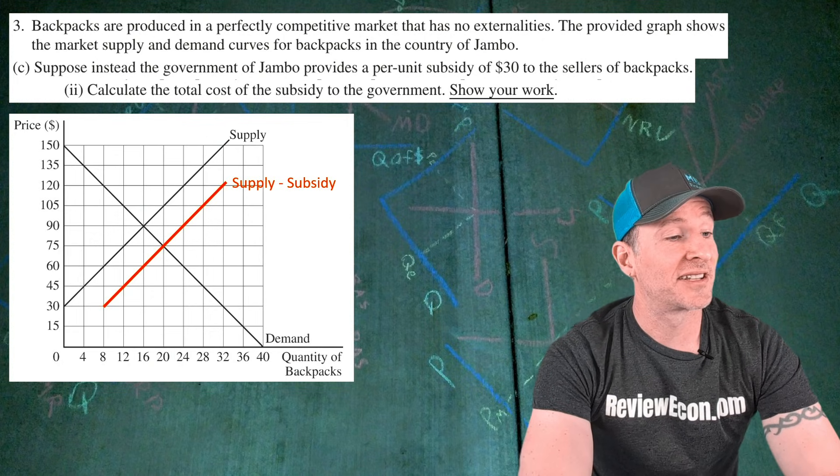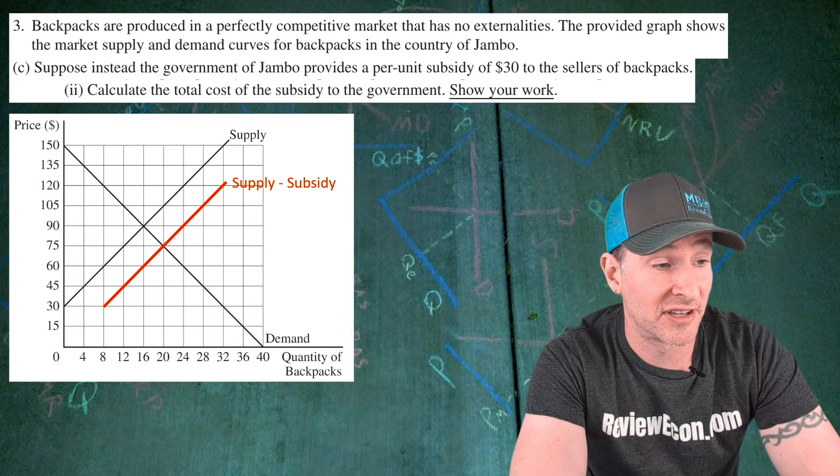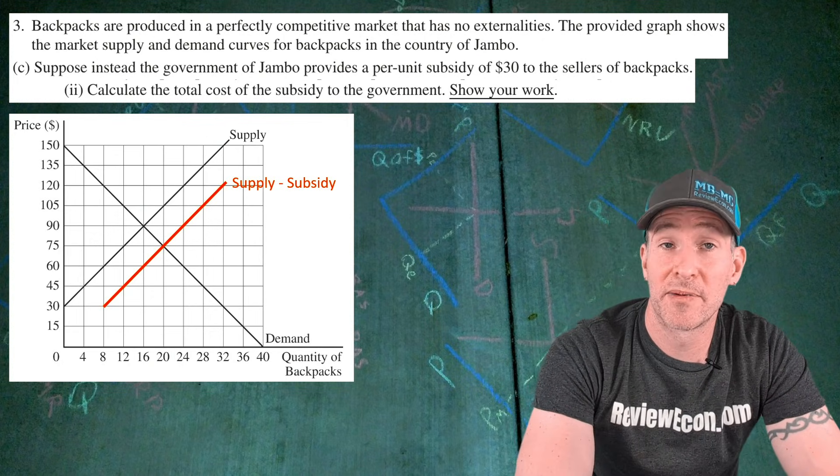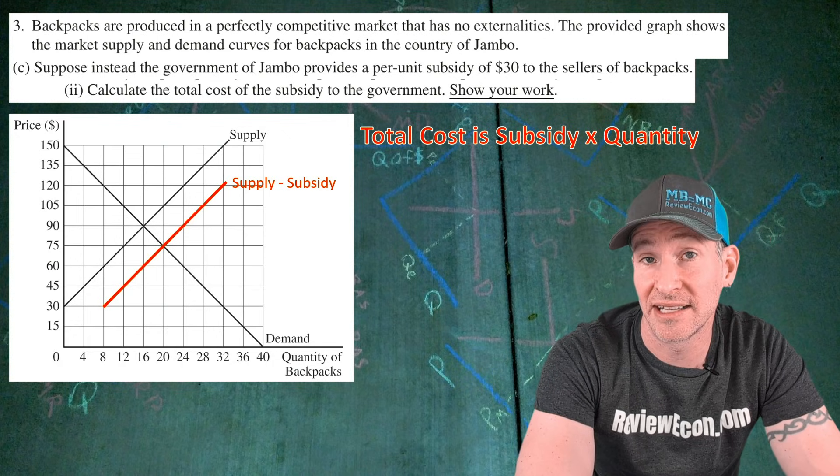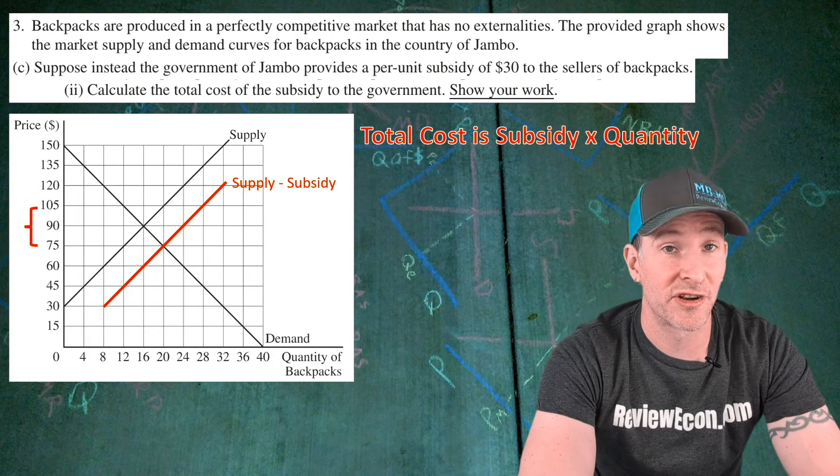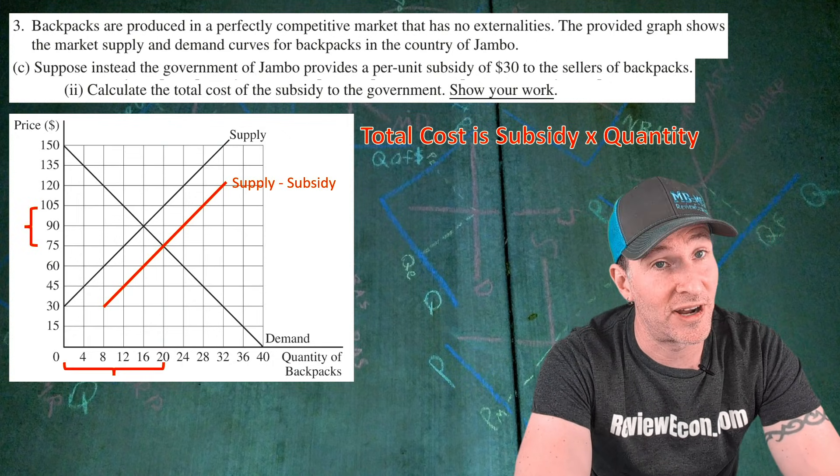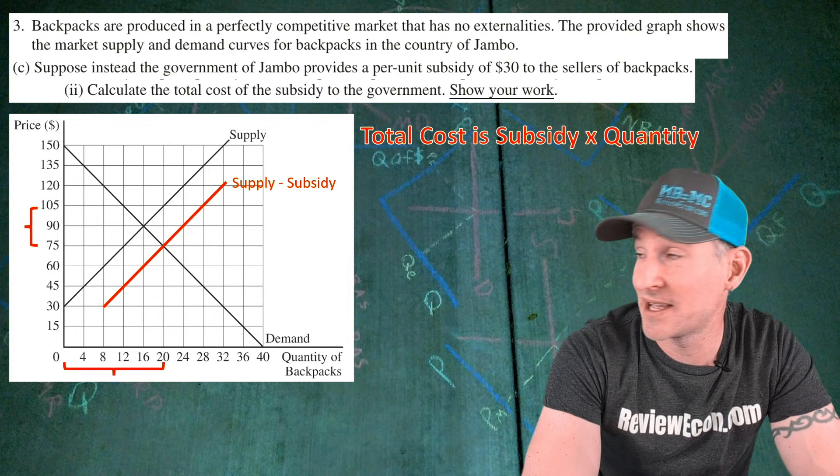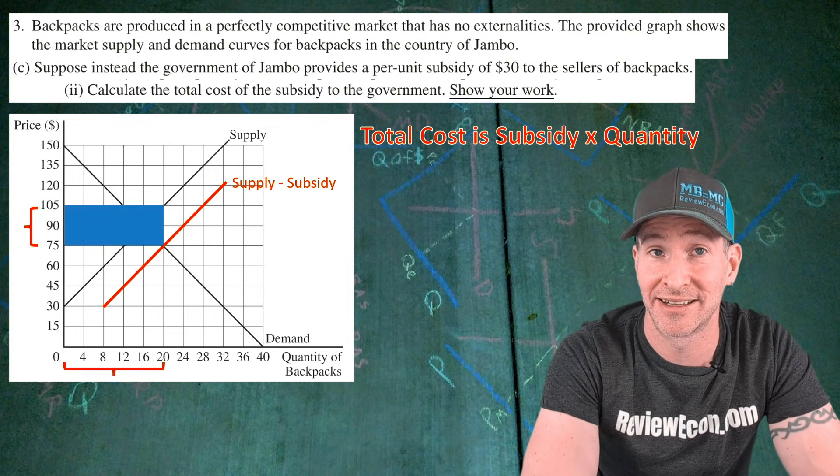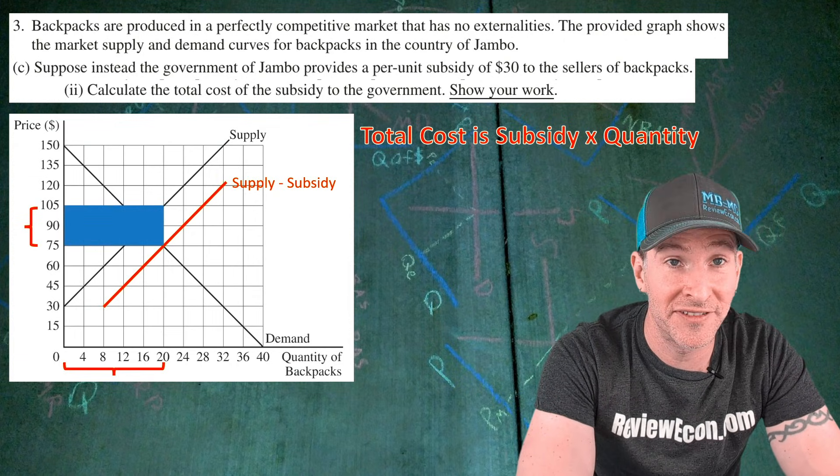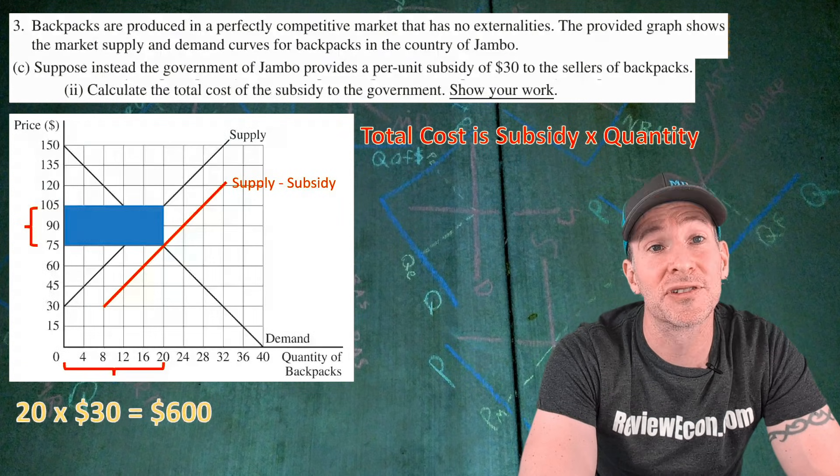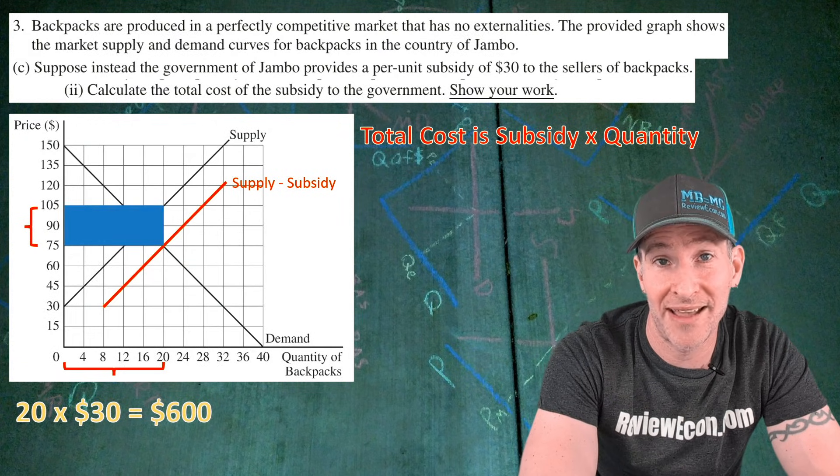For part C double I, we have to calculate the total cost of the subsidy to the government. And we have to show our work. Remember, the total expenditure of the subsidy is going to be the subsidy times the quantity. The subsidy is $30 and the quantity is 20. On the graph, you can also find the amount spent by the government in that rectangle right there. Plug in the numbers and calculate the area of it and you get 20 times 30 equals $600. And if you have that math, you get your next point.